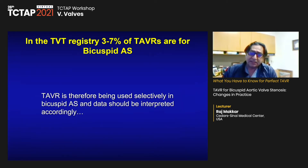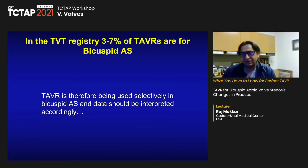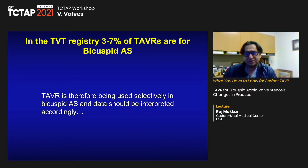Yet if you look at TAVR registries such as the TVT registry in the United States, the number of patients with bicuspid aortic stenosis undergoing TAVR was only 3% to 7%. So TAVR is being used selectively in bicuspid aortic stenosis, and the data should be interpreted accordingly.